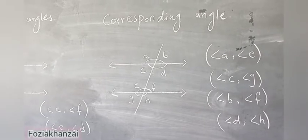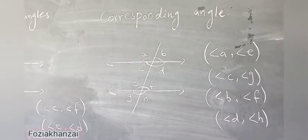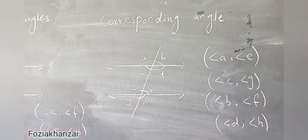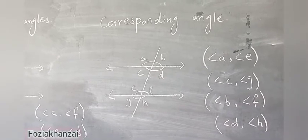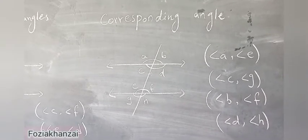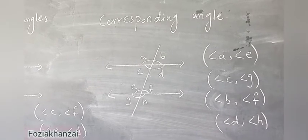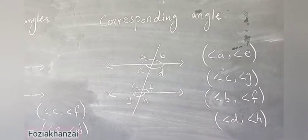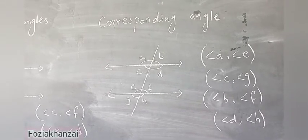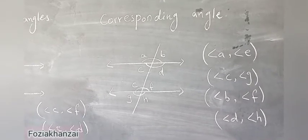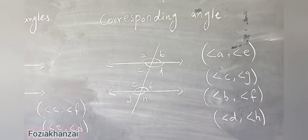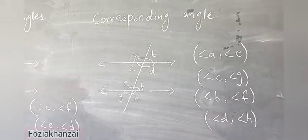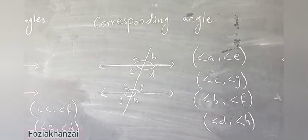Now the next heading: corresponding angles. For corresponding angles, first we draw two parallel lines, then the third line is the transversal line. You know the definitions of parallel line and transversal line. After the transversal intersects the parallel lines, we have eight angles: A, B, C, D and E, F, G, H. In this figure we have eight angles.